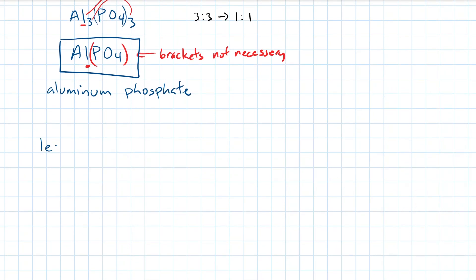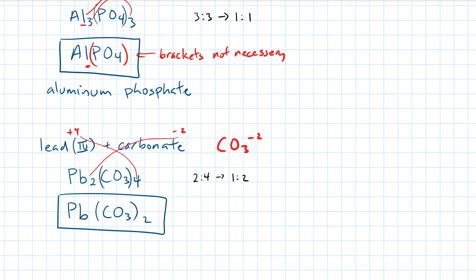One last example, lead 4 plus carbonate. Yes, a polyatomic metal can bond with a polyatomic ion. Lead has a charge of positive 4, and carbonate is CO3 with a charge of negative 2. With enough homework practice, you'll have this memorized. After a quick crossover, we get Pb2CO34. We'll correct the first issue by placing brackets around the CO3, and we'll correct the second issue by noticing that this hasn't been fully reduced yet. A 2 to 4 ratio can be simplified down to a 1 to 2 ratio. So our final answer is Pb, open bracket, CO3, close bracket, 2, or its corresponding nomenclature, lead 4 carbonate.